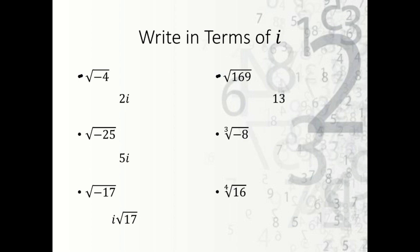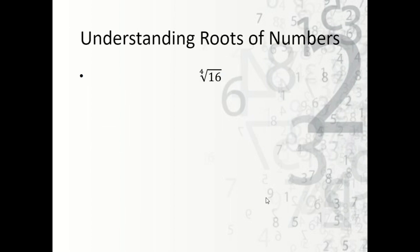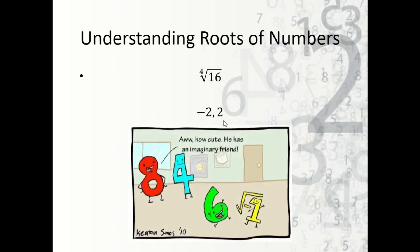The cube root of negative 8: notice with a cube root, we can have a positive value, because negative 2 times negative 2 times negative 2 stays negative. So the cube root is negative 2. The fourth root of 16 is ±2. But what we need to notice is there's a fourth root, which means there are 4 roots total, and we only have 2 of them so far.